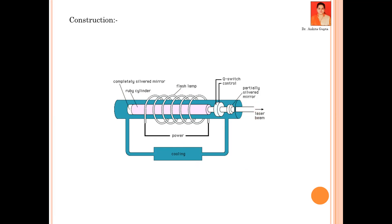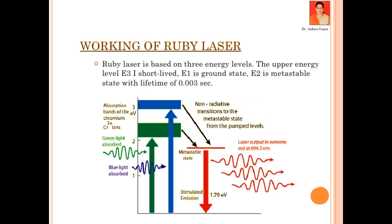In the construction and working: to obtain laser light, this is a three-level laser system. We have to do the levels — the electrons (atoms) go to the excited state, and then after stimulated emission, they come back down.